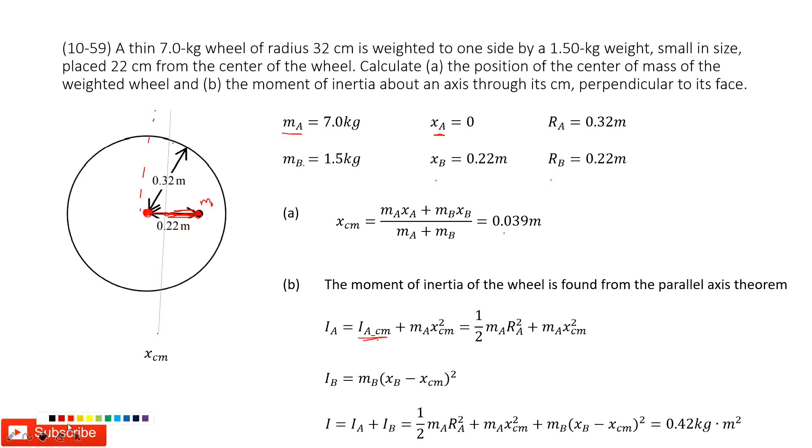Because we can see, this is XB. This is XCM, so XB minus XCM is this distance. And then we add moment of inertia for A and the moment of inertia for B. We get the final answer there. Thank you.